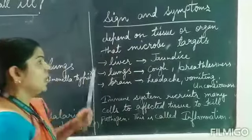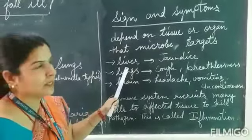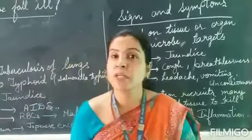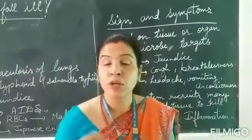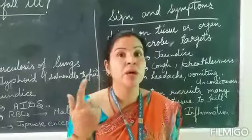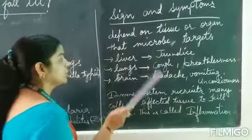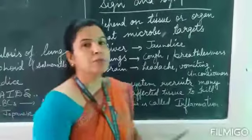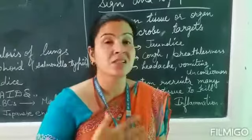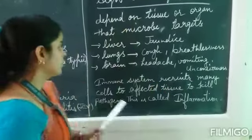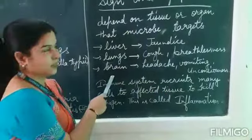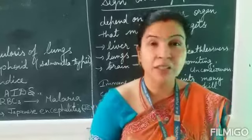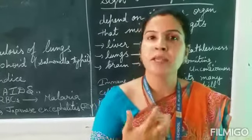For example, if microbes attack the liver, it causes jaundice — the symptoms include the whole body turning yellowish, dark yellow urine, and yellowish eyes. If microorganisms target the lungs, the symptoms include cough, pain, and breathlessness. If the microorganisms target the brain, then symptoms include headache, vomiting, uneasiness, and unconsciousness. These are your signs and symptoms.